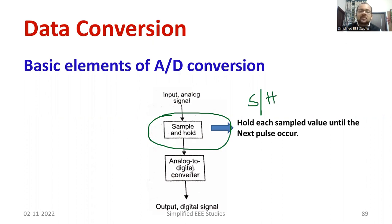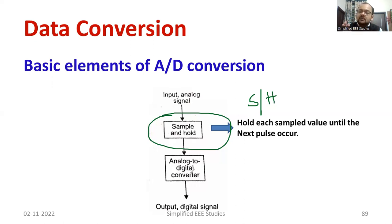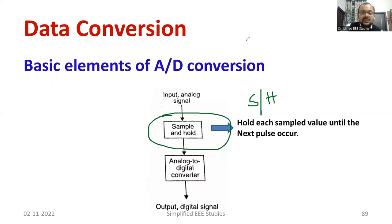What is the purpose of the sample and hold circuit? The main purpose of the sample and hold circuit is to hold the signal — hold the input until the next value occurs. Until the new pulse, for conversion, we have to hold the previous value. It holds each sample value until the next pulse occurs. That is the purpose of the sample and hold circuit.